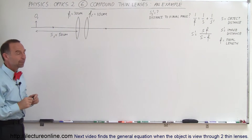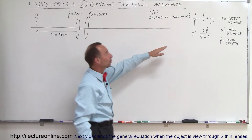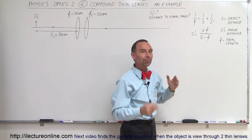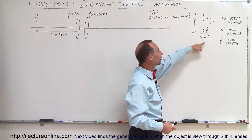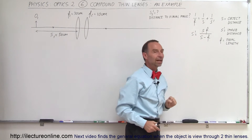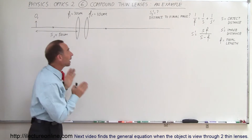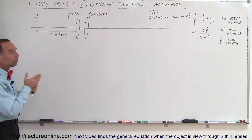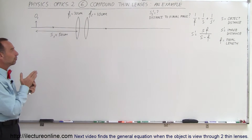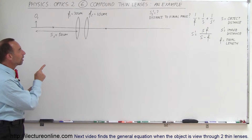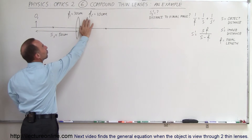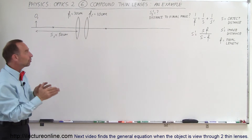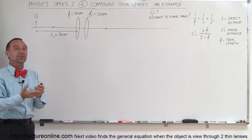We use the thin lens equation, which we can solve for S prime — the image distance based on the object distance and the focal length. With a compound thin lens problem, we do it one lens at a time. First, we find the image caused by the first lens, completely ignoring the second lens. Then we use that image as the object to the second lens to find the image of the second lens.